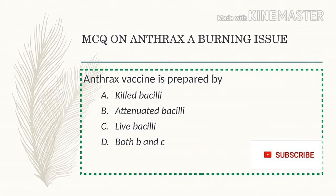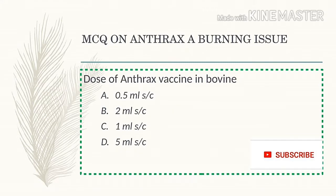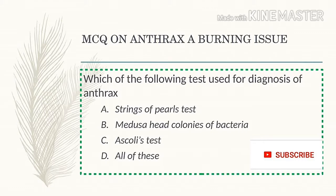The anthrax vaccine in bovine is prepared from attenuated bacilli — not killed bacilli or live bacilli alone. The dose of anthrax vaccine in bovine is 1 ml by subcutaneous route.